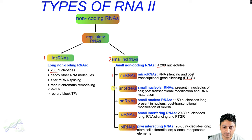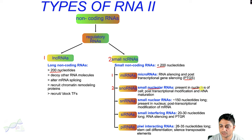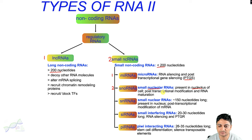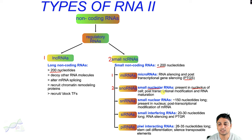Second, we will talk about the small nucleolar RNAs, or snoRNAs. From the name, it is clear that these RNAs are present in the nucleolus of the cell. They are responsible for post-transcriptional modification and also in the maturation of different RNAs like ribosomal RNAs and other different types of RNAs.